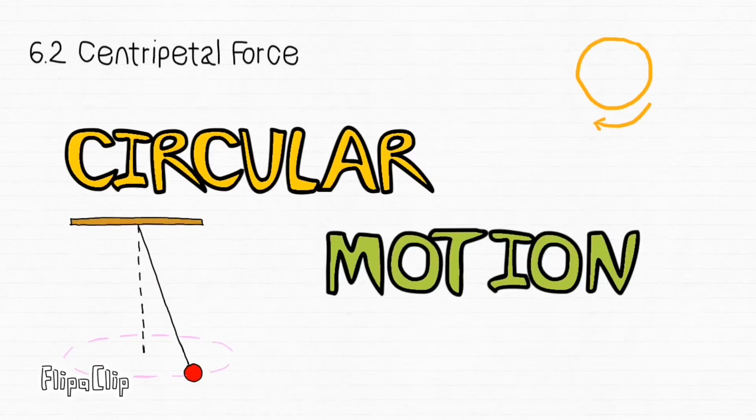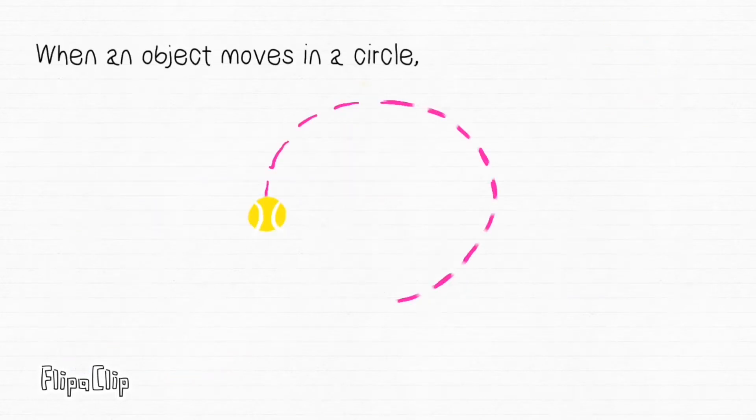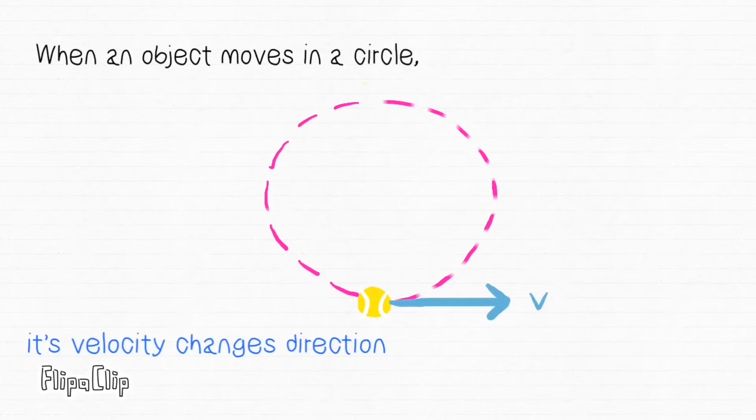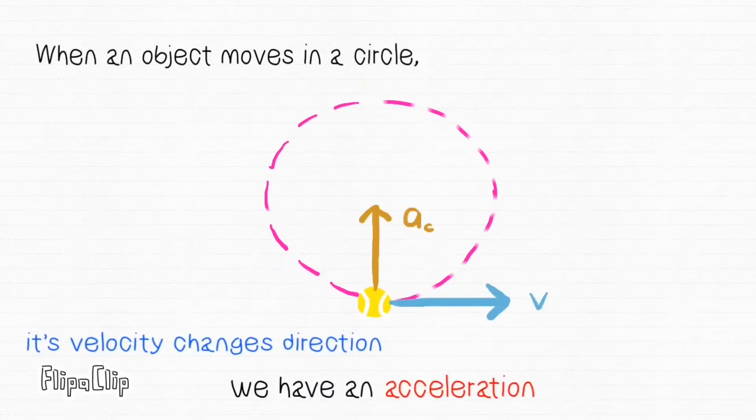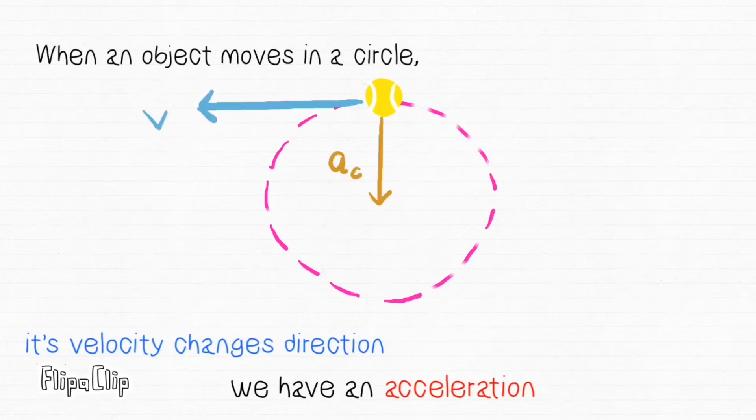Today's topic is circular motion. When an object moves in a circle, its velocity changes direction. That means that we have an acceleration.